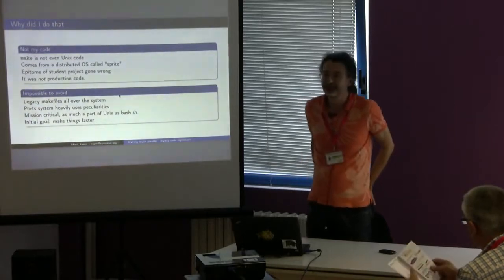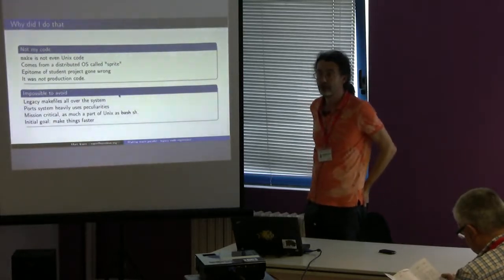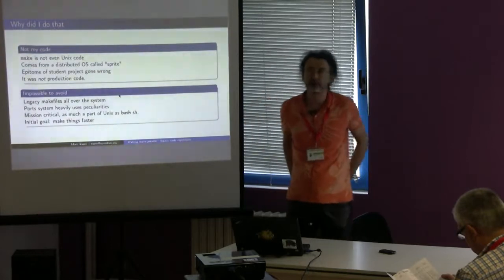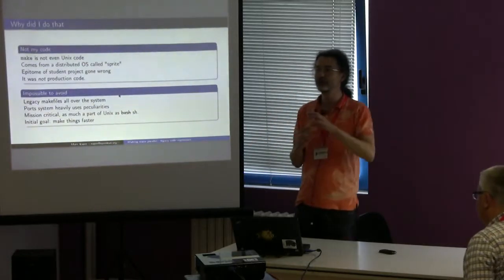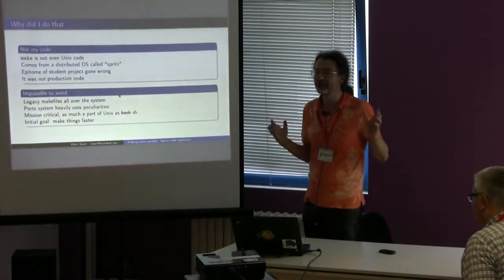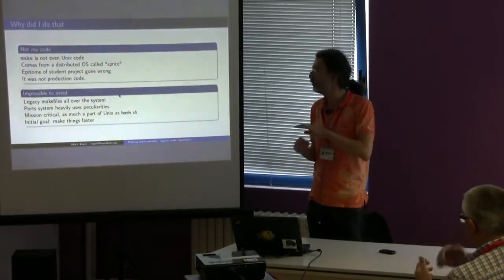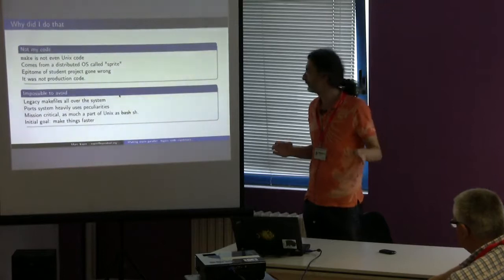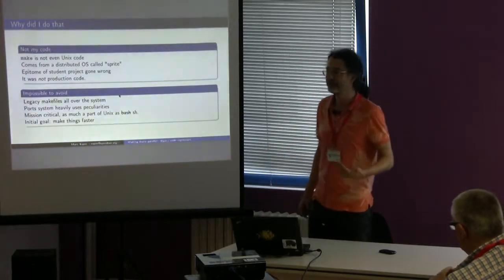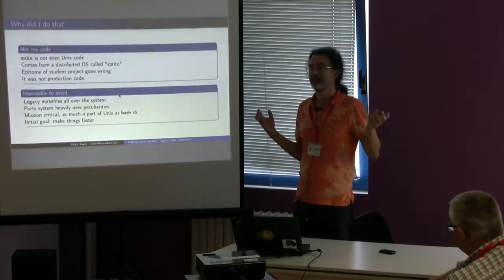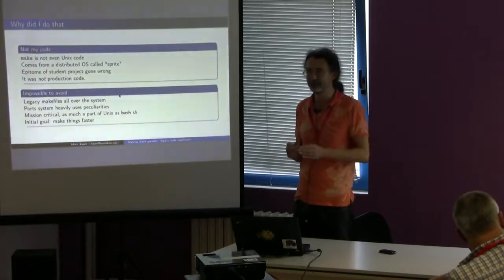I got tricked by a guy named Tio into playing with make. It's obviously not my code — it's crappy code, actually. It's not even UNIX code. The make we have in OpenBSD, which is basically what's also in NetBSD, is coming from some experimental operating system called Sprite, which was supposed to be distributed. It's mostly a student project. Definitely not production code when I started with it. These days, if you want to build anything on a system, you have to have some kind of make. It's supposed to be more or less standard, but it's not very standard. It's mission critical — you have to have a make that works, as well as your shell. Choose the right one, please.